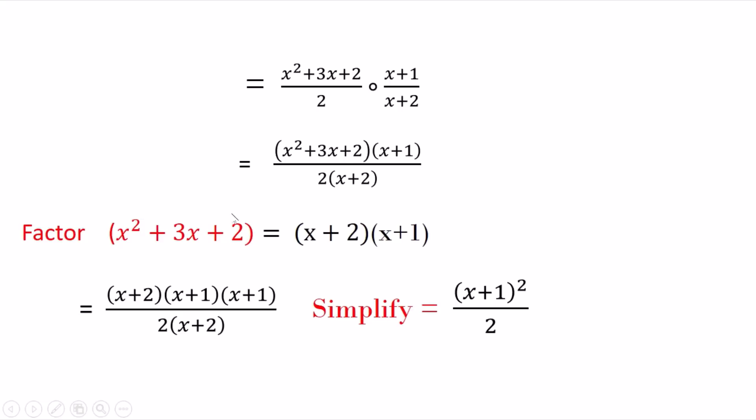As you see here, 2 times 1, and then when you add them, it gives you 3. So the new factoring for this equation, or for this problem, it becomes x plus 2 times x plus 1. How did I get it? The way I showed you in the video before.